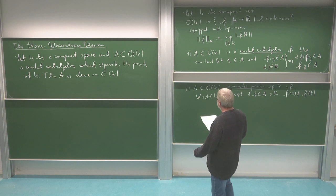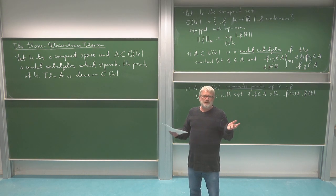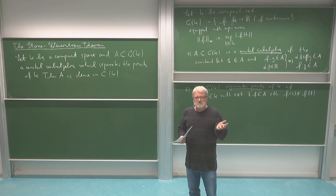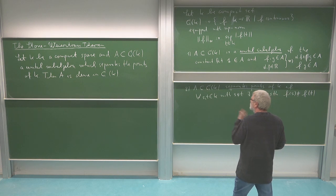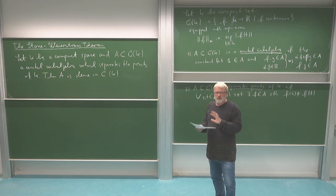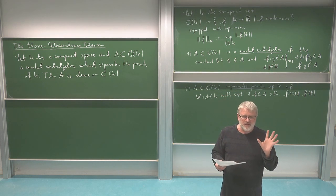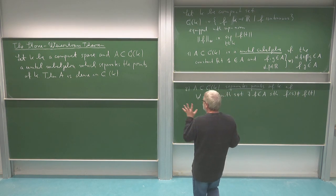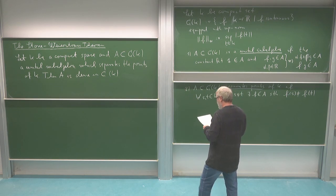That's encouraging — those are properties which polynomials have. But it looks like we're not really using much of the polynomial structure; we use very few properties. That's the amazing thing: polynomials are overkill. It's really just a unital sub-algebra which separates the points — and that's what we have to prove here.